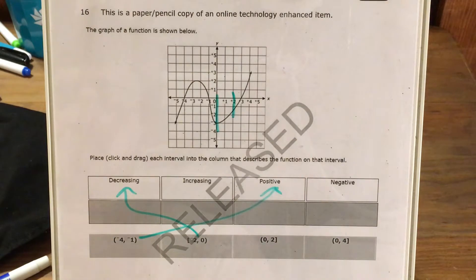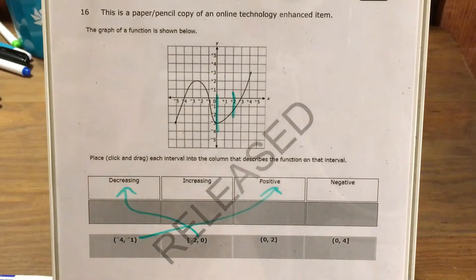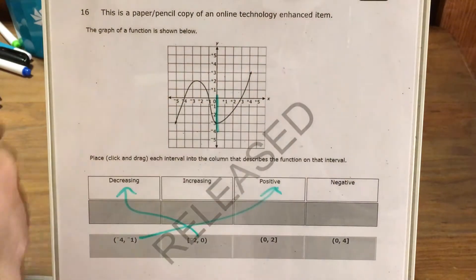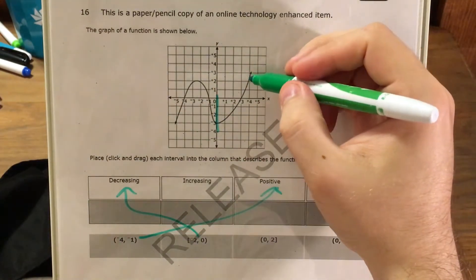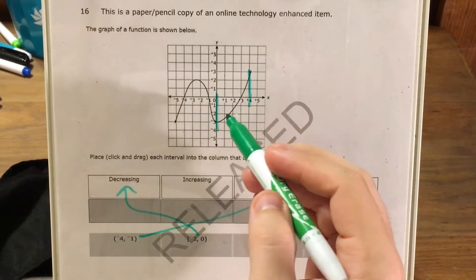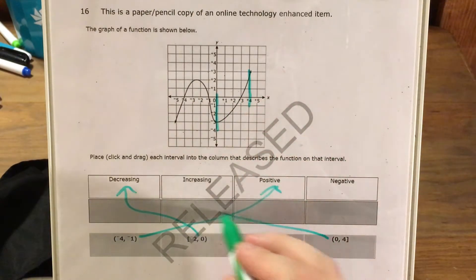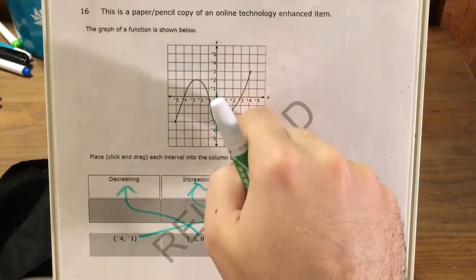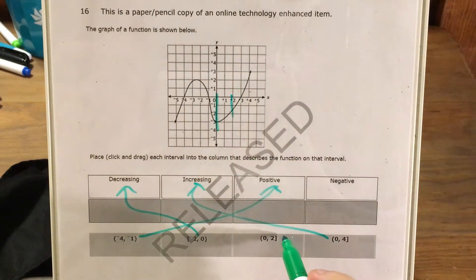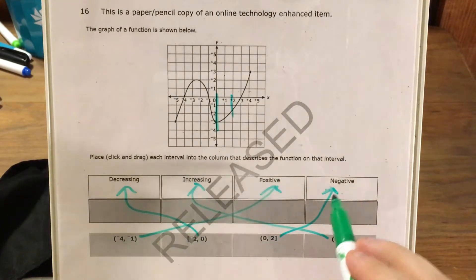...the problem gives us from an x of 0 to an x of 4. Okay, so now we can't say that this is positive or negative, but we can definitely say that this is increasing, which means that at this point we can say pretty definitively that from 0 to 2, this thing is negative.